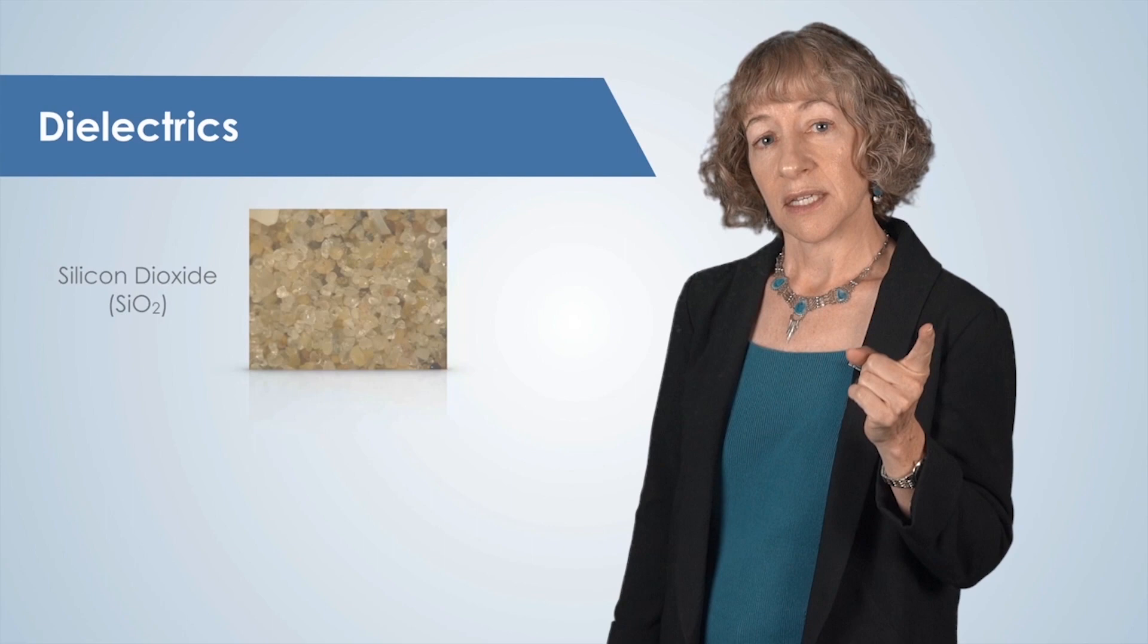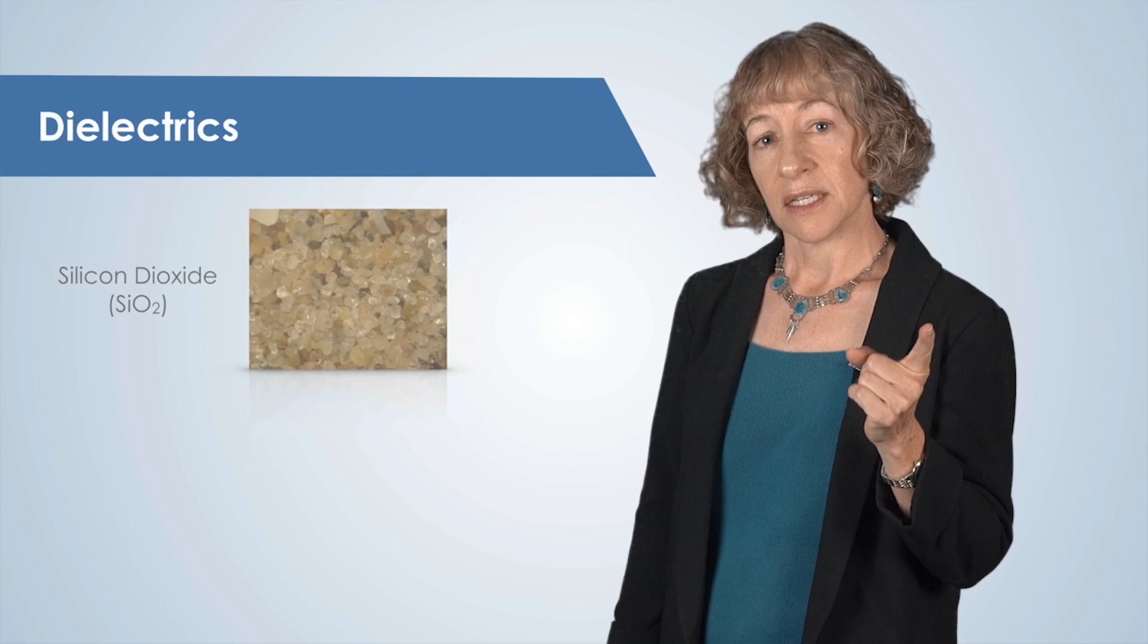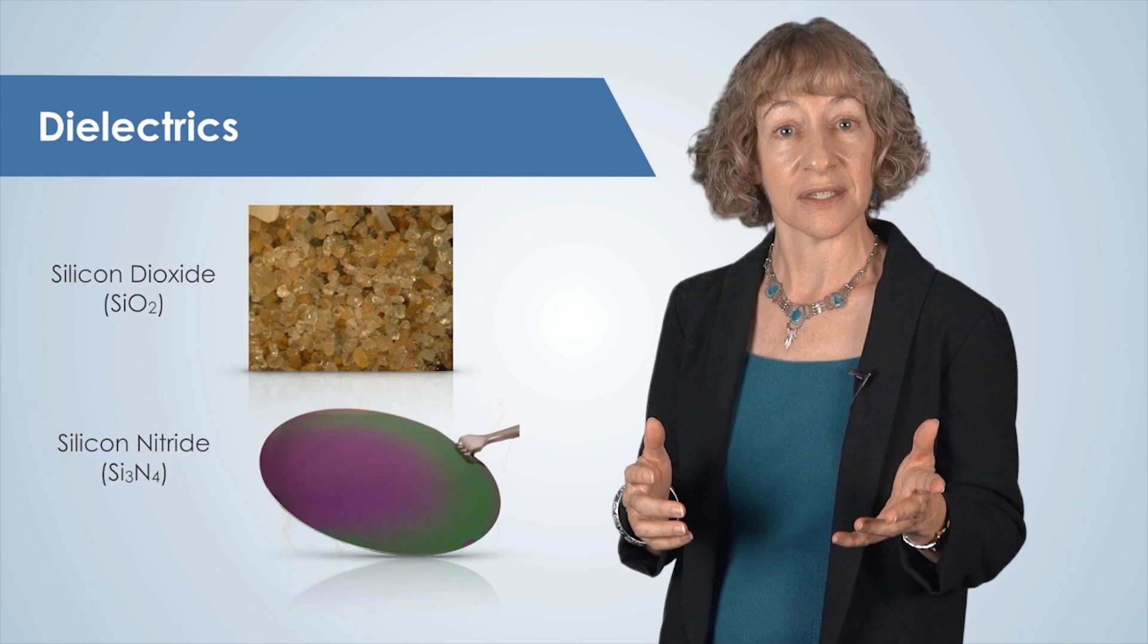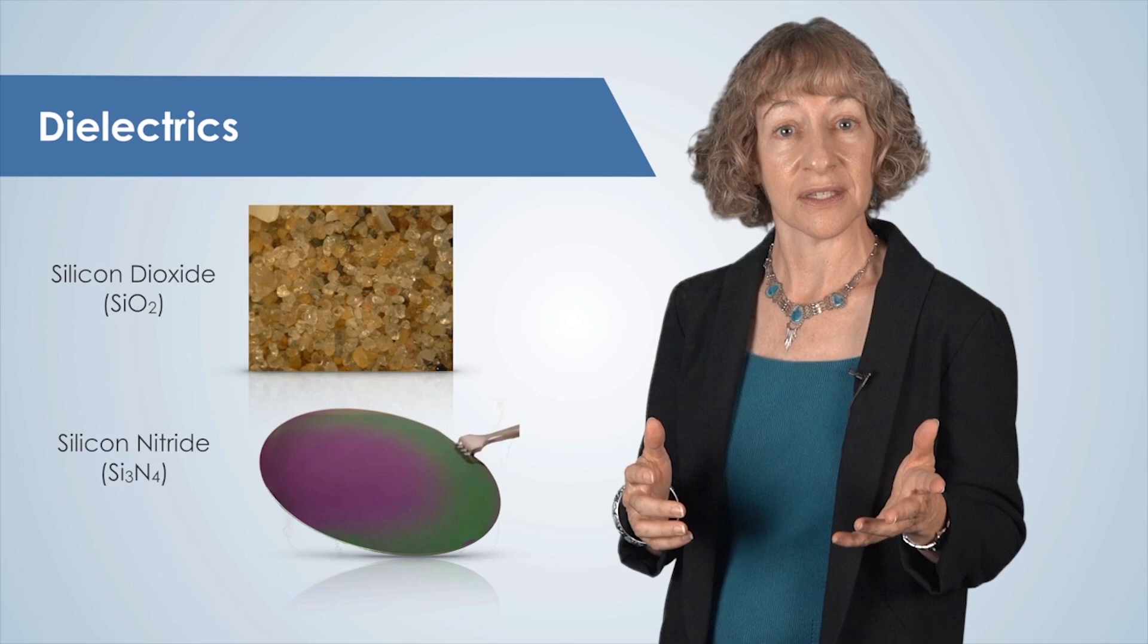PECVD is a variation on chemical vapor deposition, and what makes PECVD different is that it uses a plasma for deposition. Silicon dioxide and silicon nitride are two thin film dielectric insulating materials that are very commonly used in nano and microtechnology devices and systems, and these are deposited by CVD. So that's why many fabrication facilities have a dedicated PECVD system.